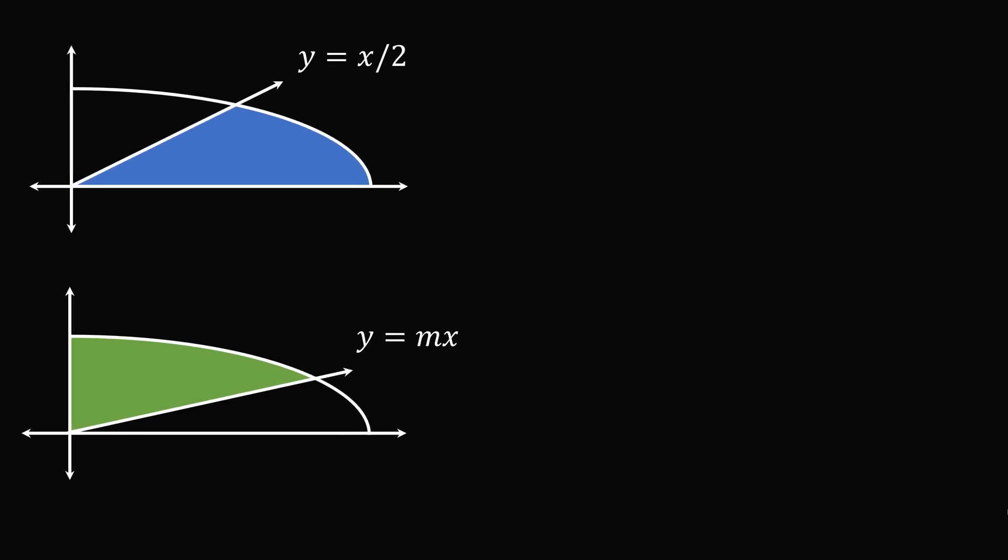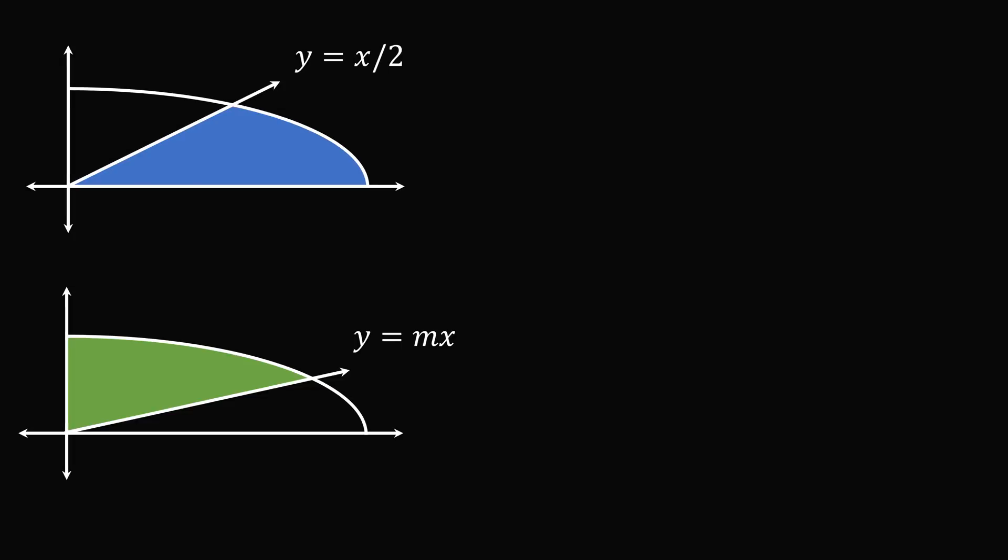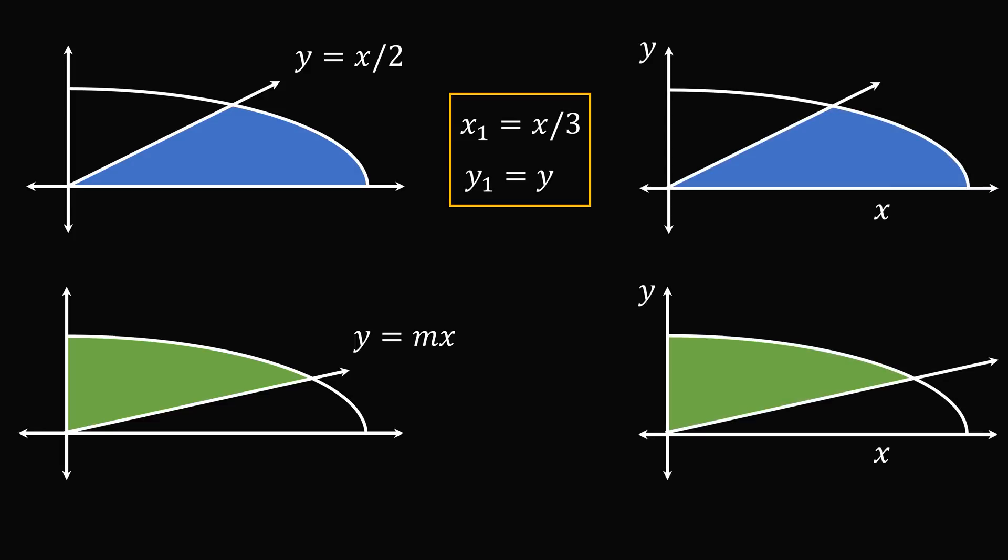There's an incredible trick to solve this problem. We will do a change of coordinates with a linear transformation. Let x1 be equal to x over 3, and let y1 be equal to y. So in the xy-plane, we have the graph of an ellipse.